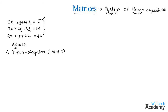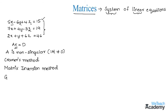Under matrices, there are three methods of solving a system of linear equations: Cramer's method, matrix inversion method, and Gauss-Jordan method. You might be familiar with Cramer's method and matrix inversion method, as in our previous videos we used these methods to solve two equations. Let us discuss Cramer's method once again.